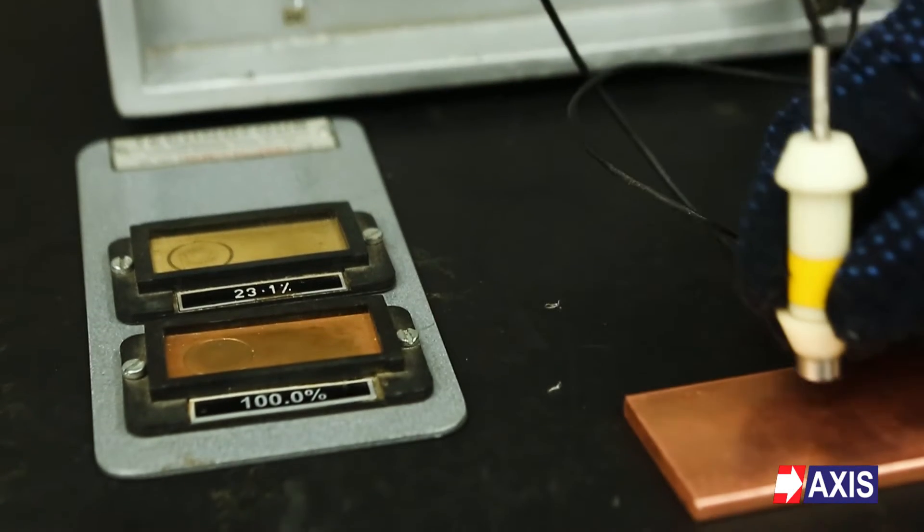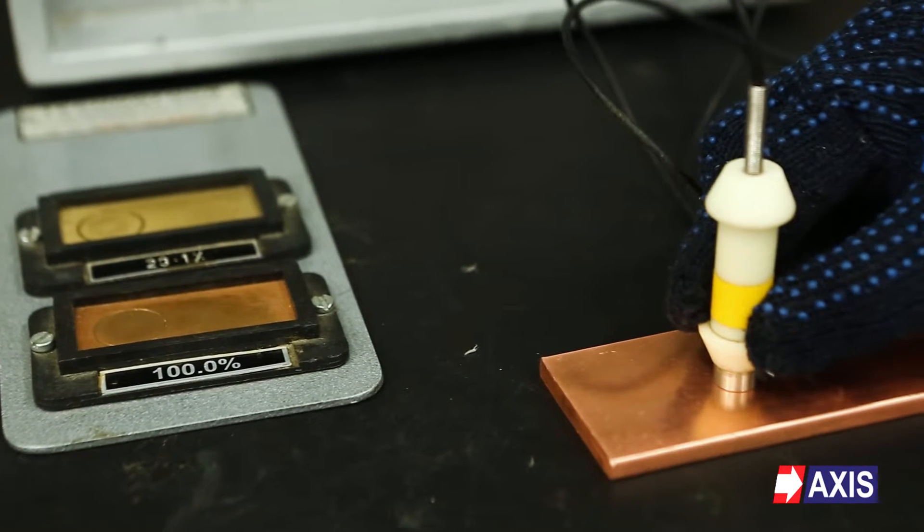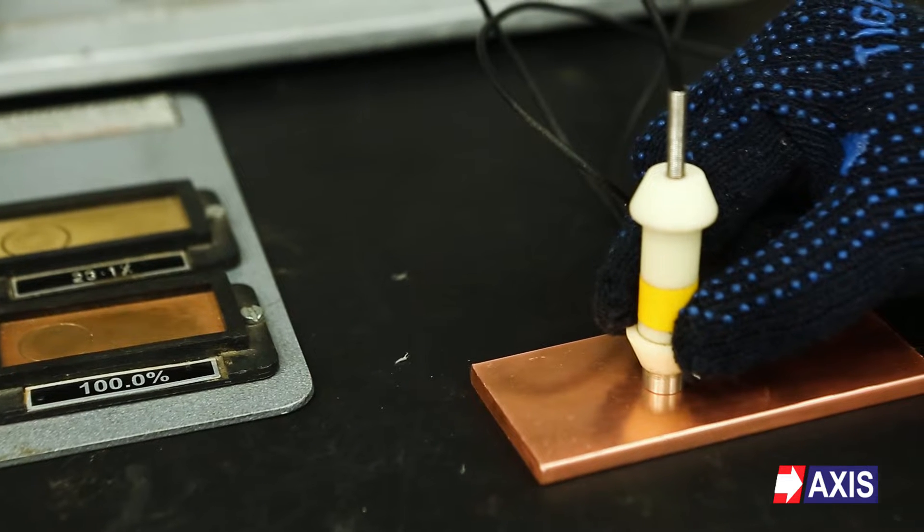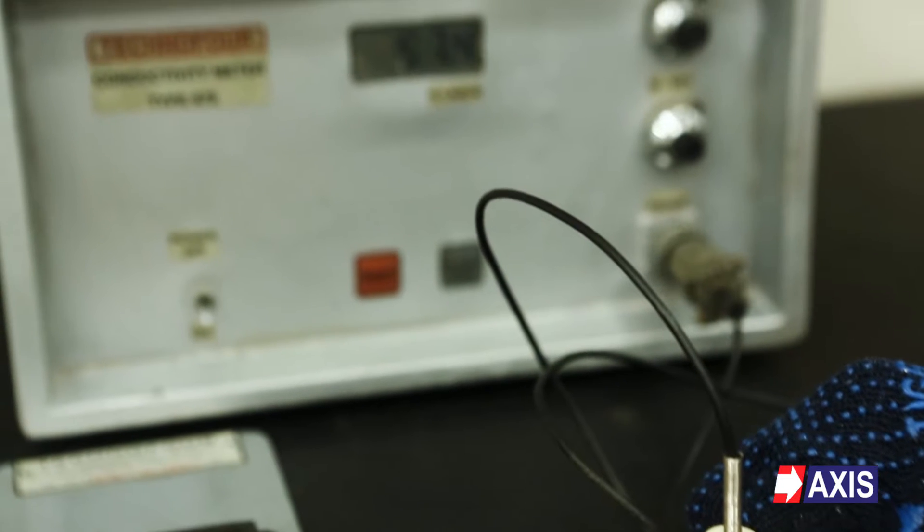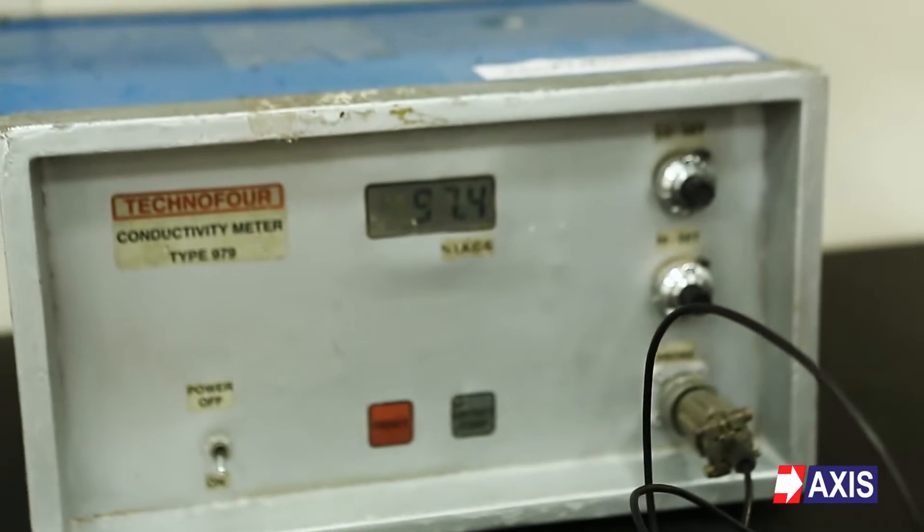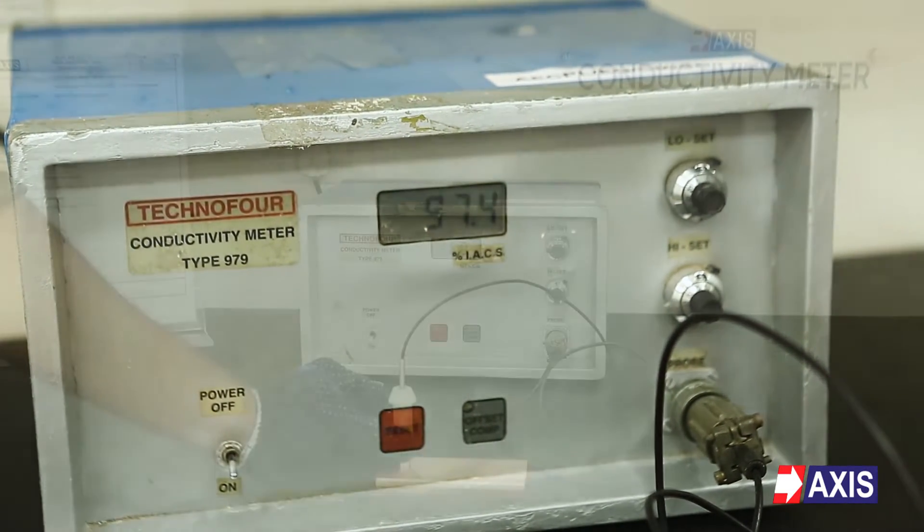The value displayed on the display unit is the electrical conductivity of the test piece. In the case of copper, the electrical conductivity must be more than 97% to ensure the material is electrolytic tough pitch or ETP grade copper.